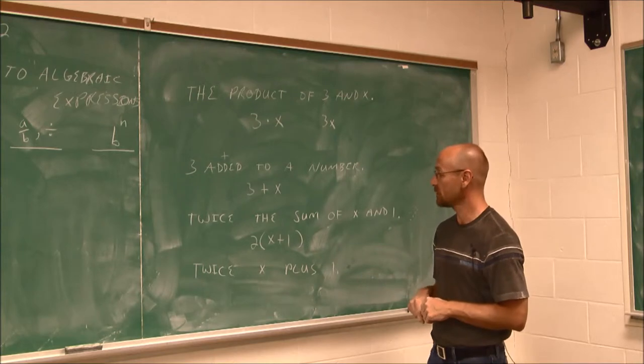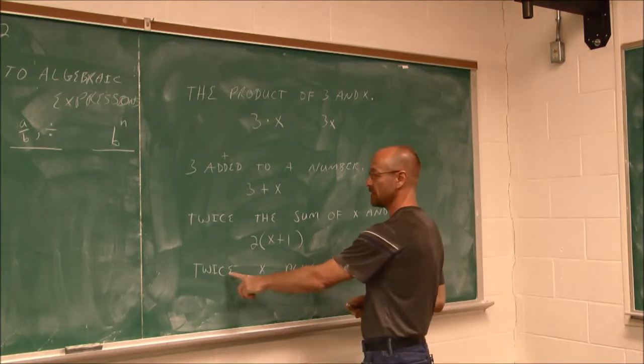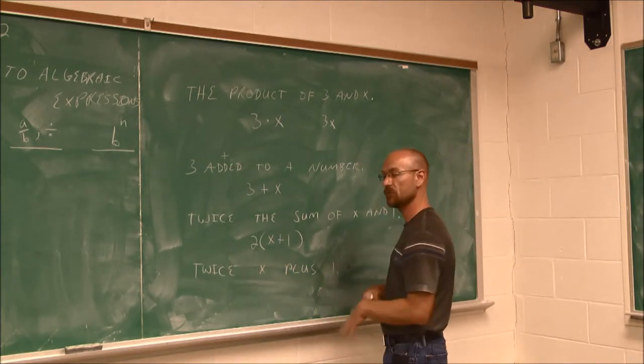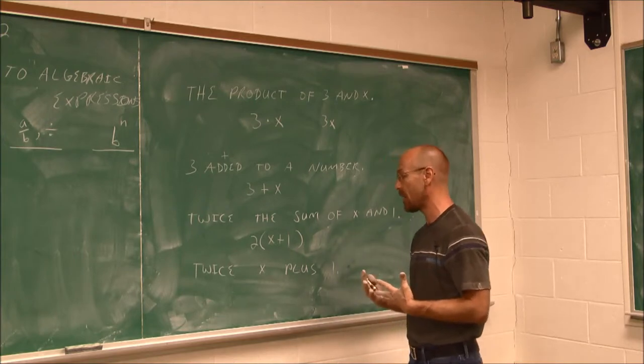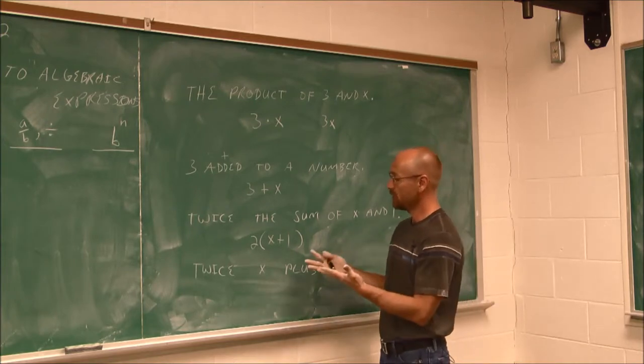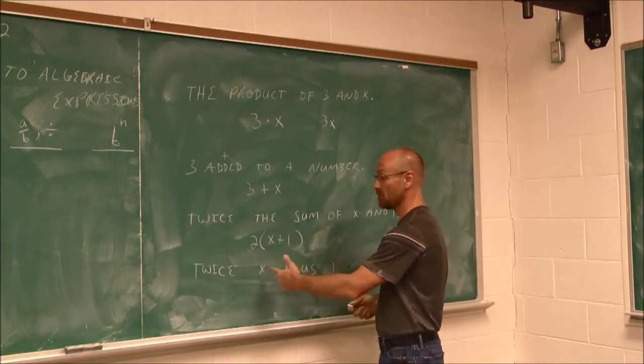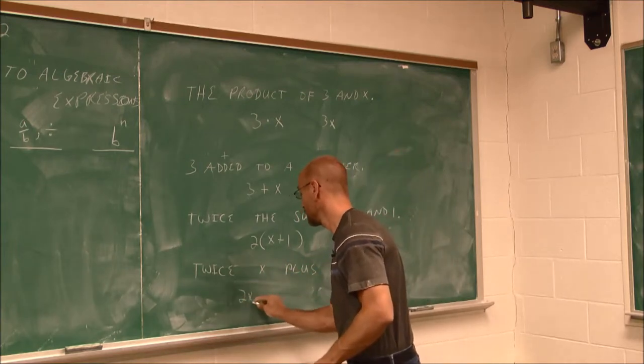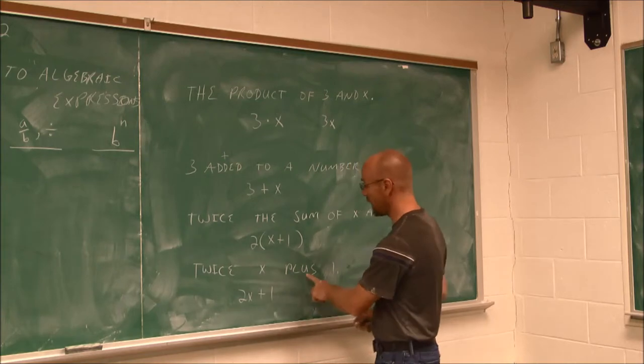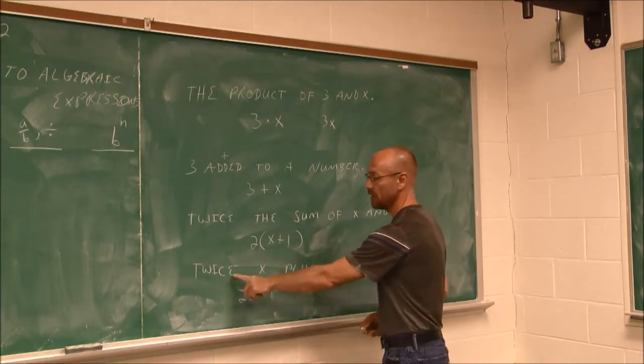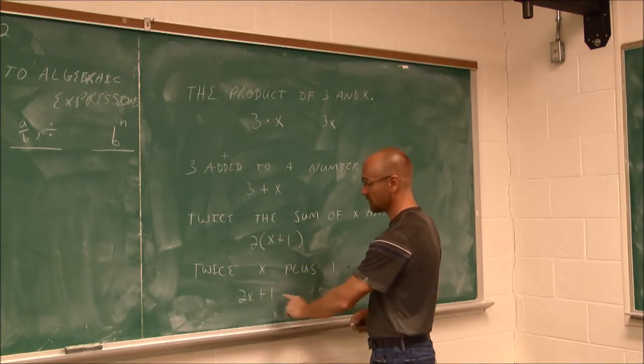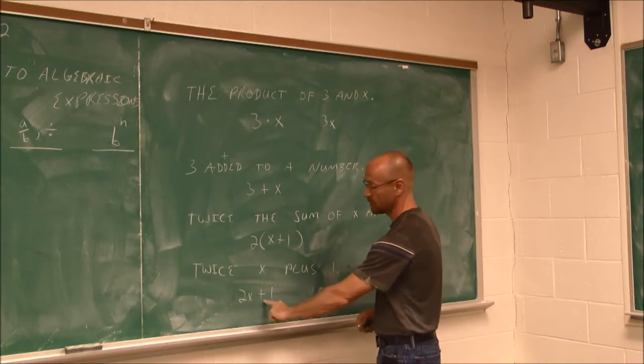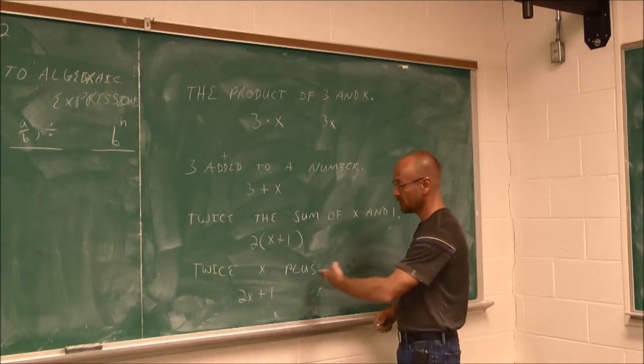All right, let's look at this one and see how is this different. This says twice x plus 1. If we think about this in terms of order of operations, we would essentially multiply before we add. Twice x plus 1. So we identified this means addition. This means multiplying by 2, 2x plus 1, twice x plus 1. And that's what that says.